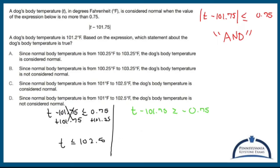Over here, I'm going to add 101.75. Add 101.75. Cross you out. T is greater than or equal to 101.